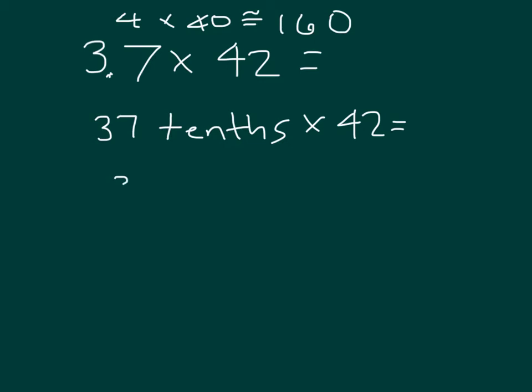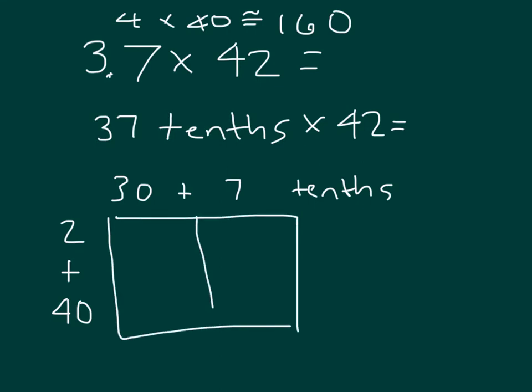Breaking this down, we get 30 plus 7 tenths, and then the 42 can be broken down into 2 plus 40. We're looking at that area model for that product. 30 times 2 is 60. 2 times 7 is 14. 30 times 40 is 1,200, and 40 times 7 is 280. 60 plus 14 is 74, and 1,200 plus 280 is 1,480.